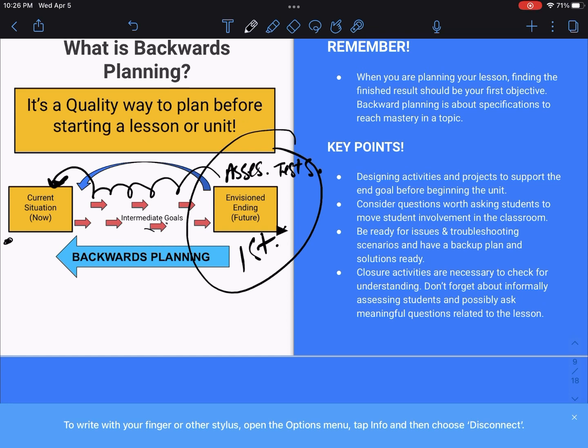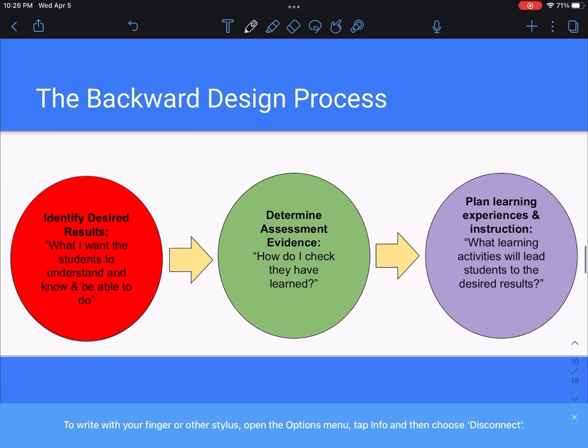Also, closure activities are necessary to check for understanding. So don't forget about informally assessing students and possibly ask meaningful questions related to the lesson. So a little bit more on the backward design process. First, you would identify your desired results. This is basically what you want the students to know and be able to do. Then you would determine assessment evidence. How do I check that they have learned? And you would do your assessments to figure that out. And then lastly, you would plan those learning experiences and instructions, like what learning activities will lead the students to get to the desired results.